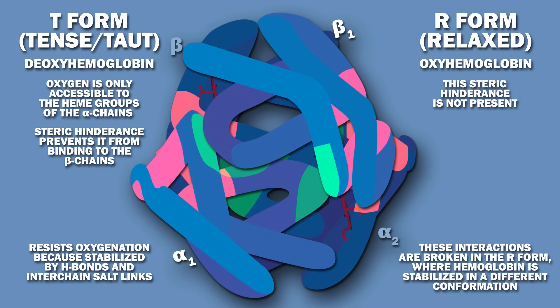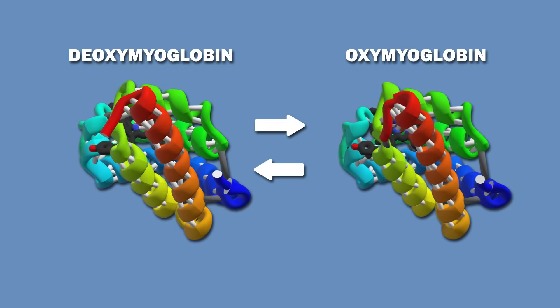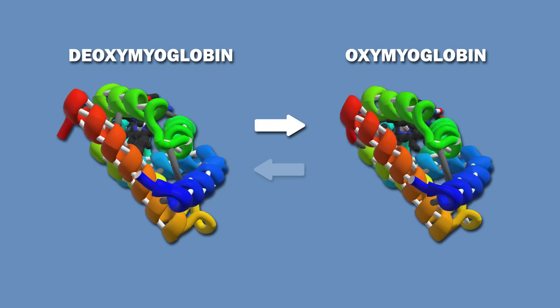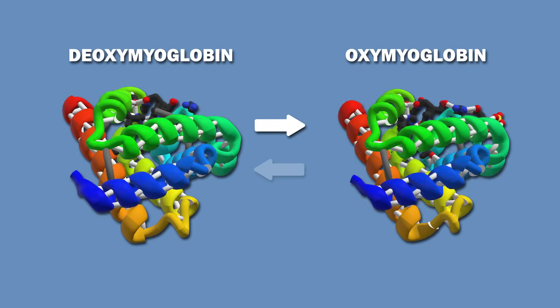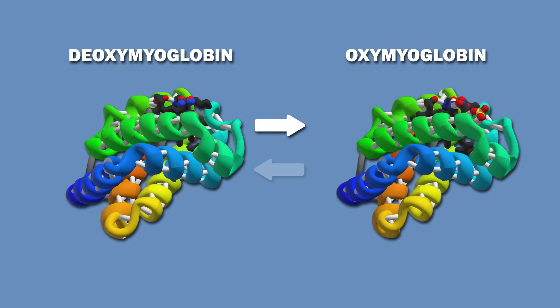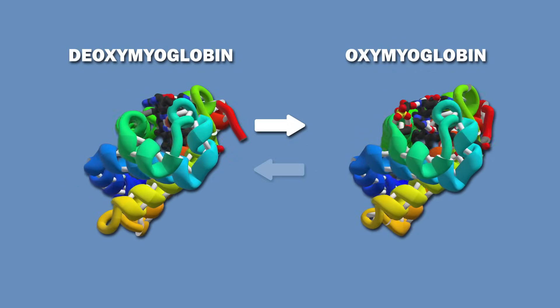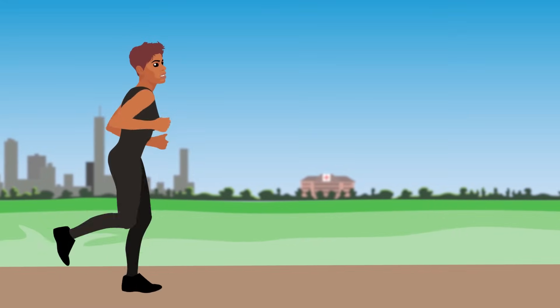These interactions are broken in the oxygenated R form, where hemoglobin is stabilized in a different conformation. Meanwhile, myoglobin does not easily release oxygen. When myoglobin binds oxygen, it becomes oxymyoglobin. Oxymyoglobin releases oxygen during times of extreme oxygen deprivation, like when you're exercising.